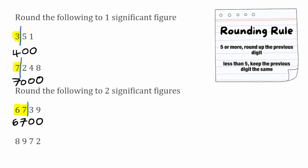For this next example we've got 8,972, rounded to two significant figures. 8 is our first significant figure, and moving to the right, 9 is our second significant figure. We put a line between the 9 and the next digit, which is a 7. Looking to the right of the line — it's a 7 — so we round up the previous digit. The 9 rounds up to a 10, so we put a 0 in the hundreds column and carry the 1 over to the thousands column, making the 8 become a 9. So 89 has gone up to 90. We then fill in our placeholders: a 0 under the 7 and a 0 under the 2. So 8,972 rounded to two significant figures is 9,000.